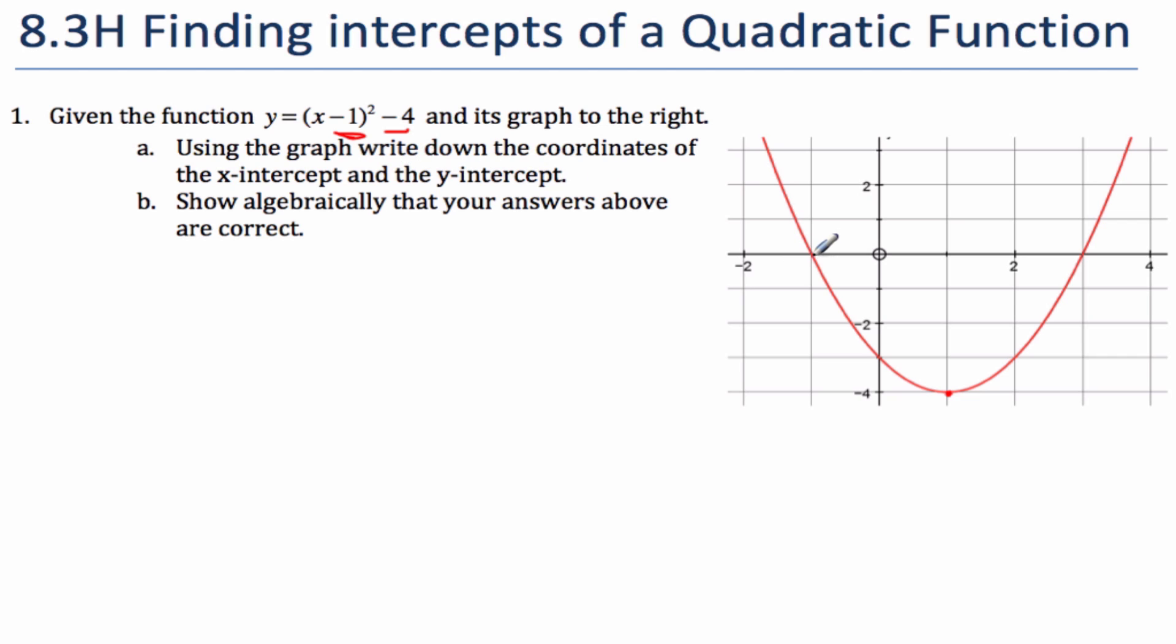To find my x-intercept, that's this coordinate point here. One x-intercept is negative 1, 0. And the other x-intercept is 3, 0. And my y-intercept down here, my y-intercept is 0, negative 3.